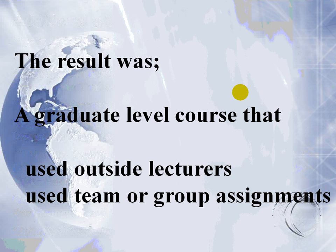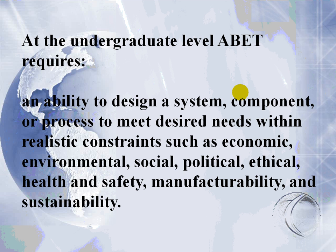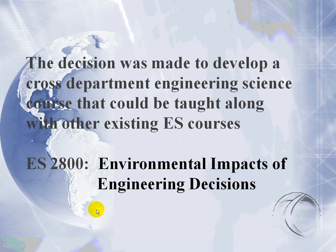The results are a graduate-level course that uses outside lecturers and is aimed at team or group assignments. At the undergraduate level, the accrediting board ABET requires, as one of its requirements, the ability to design a system, component, or process to meet desired needs within economic, environmental, social, and sustainability considerations. As a result, the decision was made to try and develop a cross-department engineering science course that would address this.